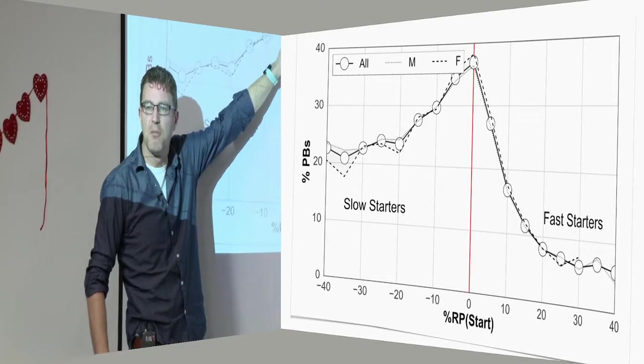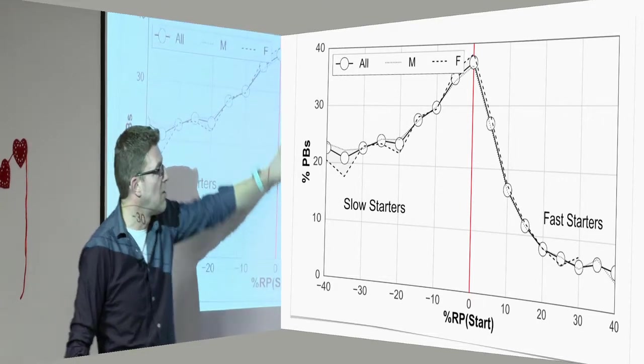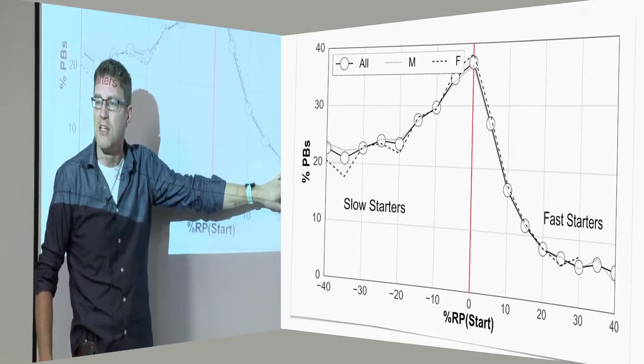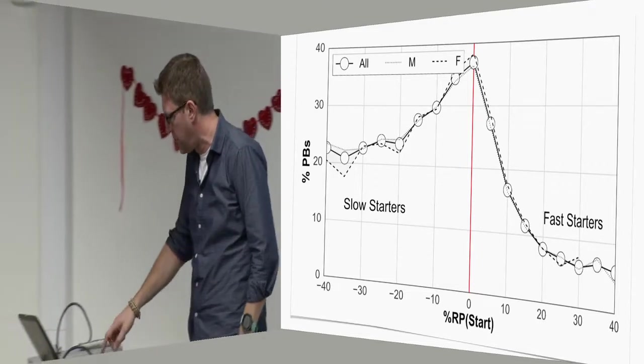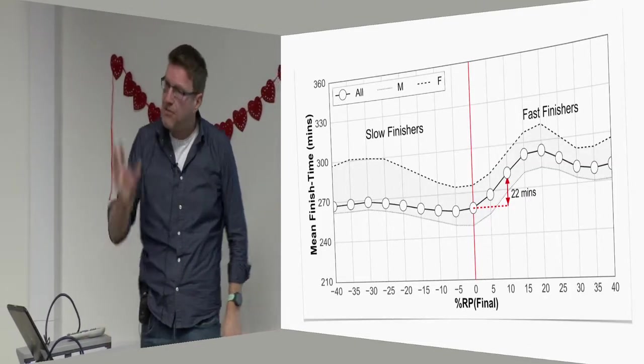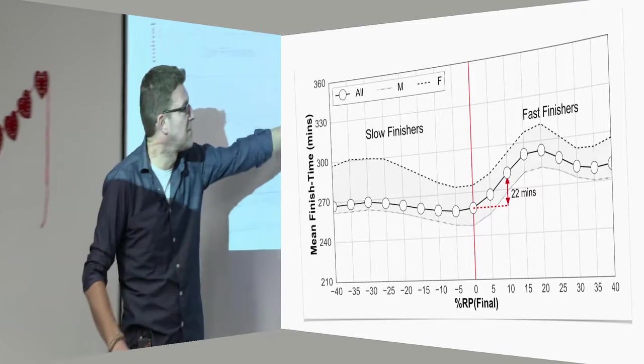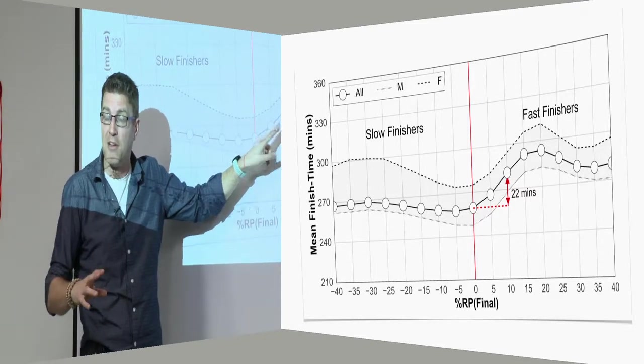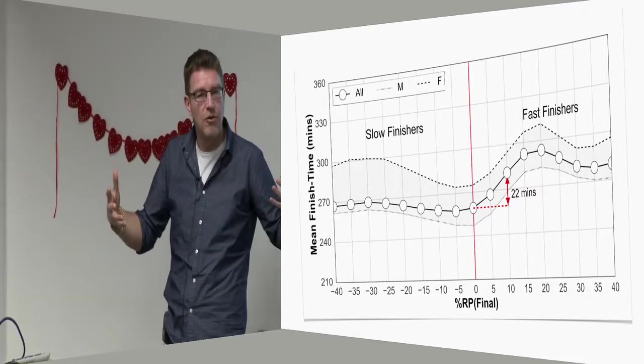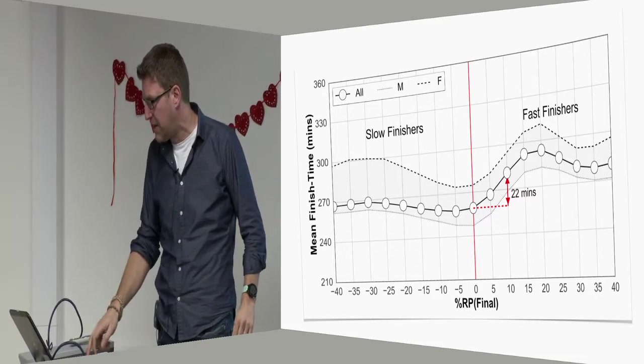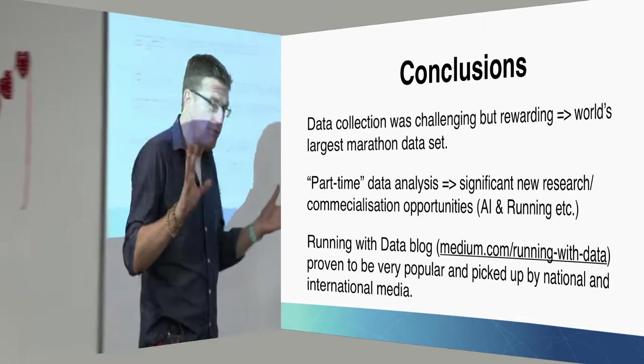When we looked at people who achieved a personal best, we found that most people achieved a personal best over their marathon history when they started at or near their average race pace. Those that started too fast rarely achieved a personal best. Those that started a bit slower often did, but not as many as those that started on their average race pace. We found similar effects for people who finished faster and slower as well. Actually people who finished faster tended not to produce better overall marathon times. It was as if they finished faster because they still had too much left in the tank and they hadn't spent it all over the course of their race. So they finished with still something to give.